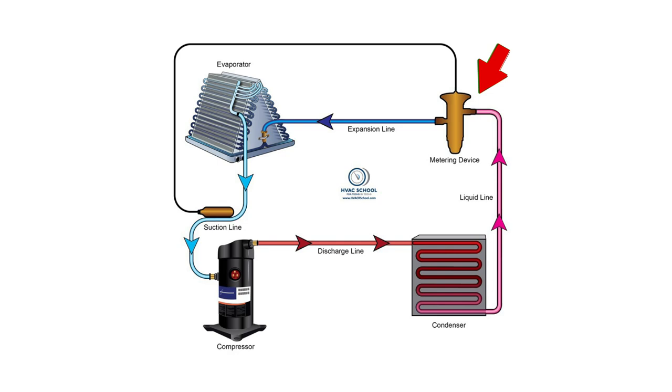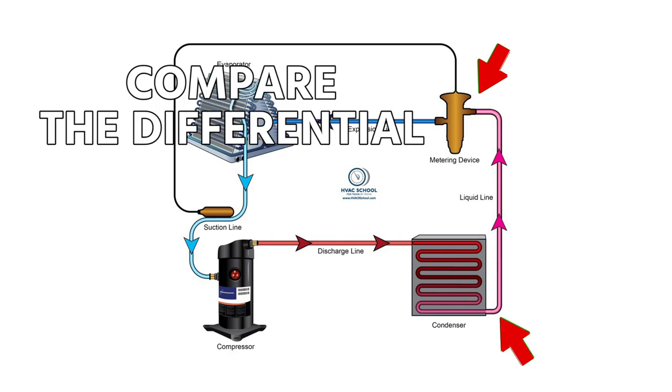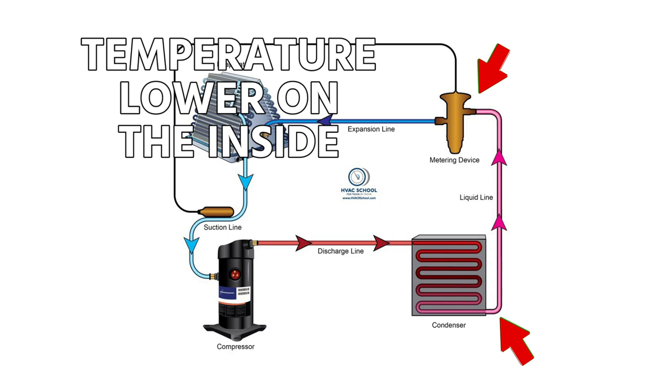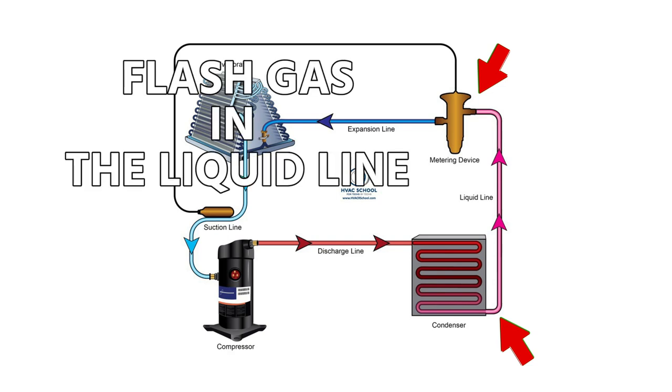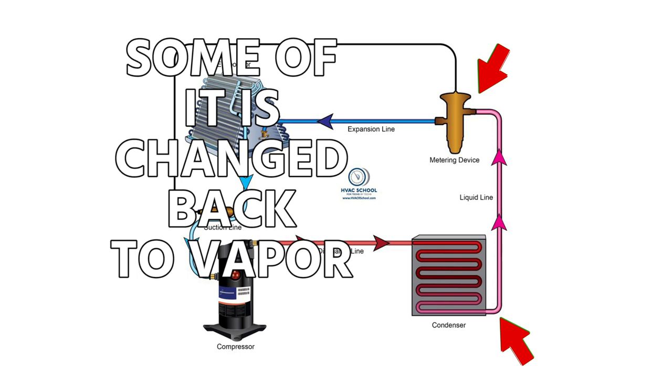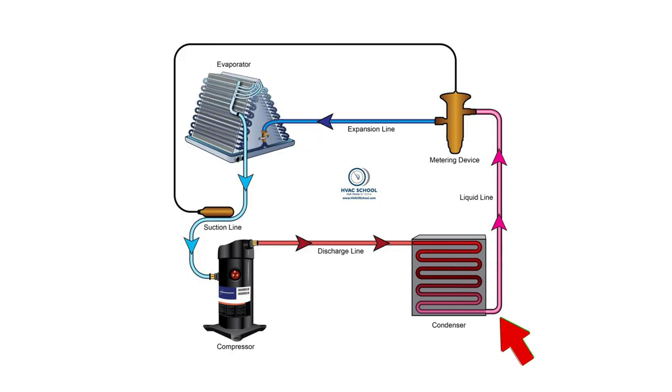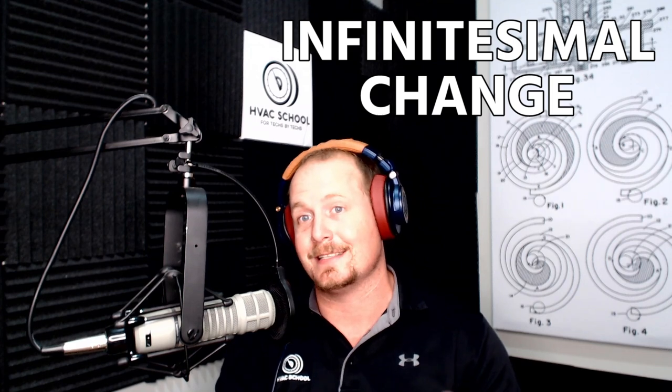Measuring your liquid line temperature in the right location is important. There is an argument to be made to measure your liquid line temperature both inside and outside and compare the differential, because you really shouldn't see any significant difference. If there is a difference where the temperature is lower on the inside than on the outside — meaning lower near the metering device than near the condenser — that's an indication of flash gas in the liquid line, meaning some of it is changing back to vapor. That's lost efficiency. We want to make sure our liquid line, as it leaves the condenser and enters your metering device near the evaporator, is pretty much the same temperature. A measurable temperature change occurs if there's enough pressure drop that all of the subcooling is taken up and it's actually beginning to boil again — that's the concept of flash gas.